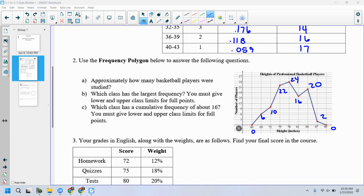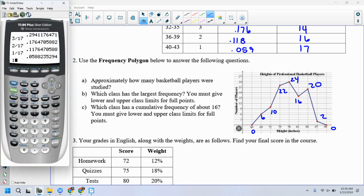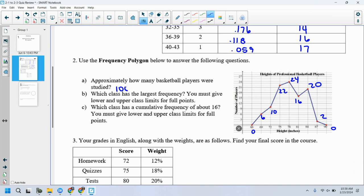That gives me a 6 plus 10 is 16. Plus 22 and 24 make 46. And then 20 and 16 make 36. And then 2 more. Look at that. Right on 100. Which class is the largest frequency? Please give the upper and lower class limits. Okay. It's pretty easy to see that this is this class, right? But what are my limits? What are my limits?